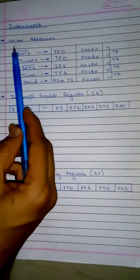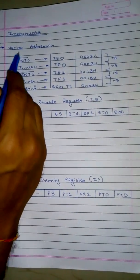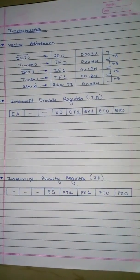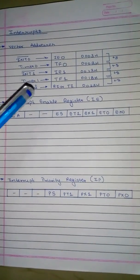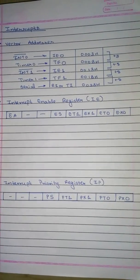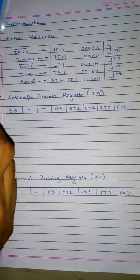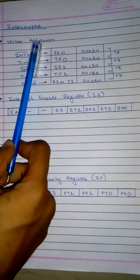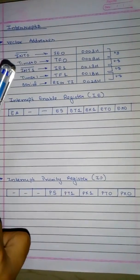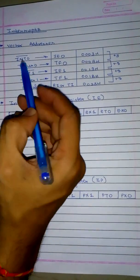Now, proceeding on to interrupts — all interrupts have a vector address. Actually, everything has a vector address. Why is it called vector? Because, as you remember, a vector has a magnitude as well as a direction. There is something called DPTR, or data pointer, which points to a particular register. That is why we call it a vector — because it is pointing, giving a direction, and at that address some information is stored which the microcontroller has to execute.